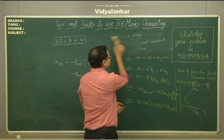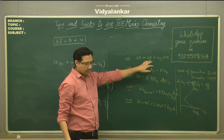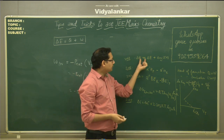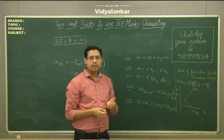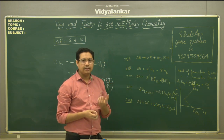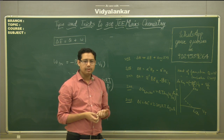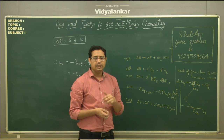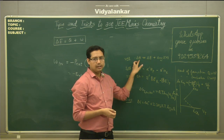Questions are also based on the relation between enthalpy change at constant pressure and change in internal energy. The relation is ΔH = ΔE + ΔnₘRT. Depending on the value of Δnₘ: if Δnₘ = 0 then ΔH = ΔE; if Δnₘ is positive then ΔH > ΔE; if Δnₘ is negative then ΔE > ΔH.